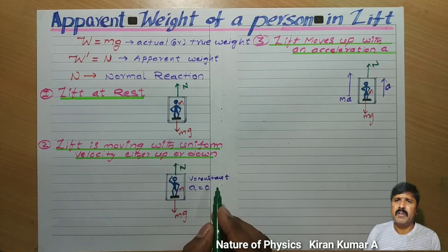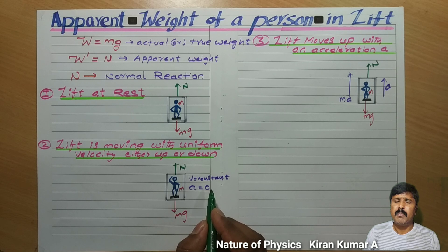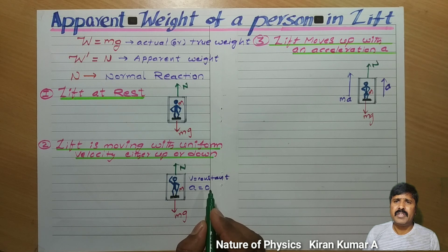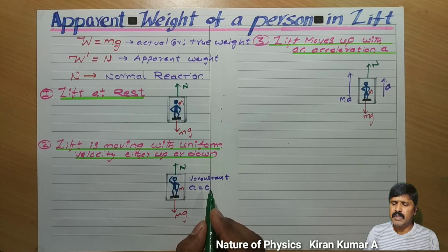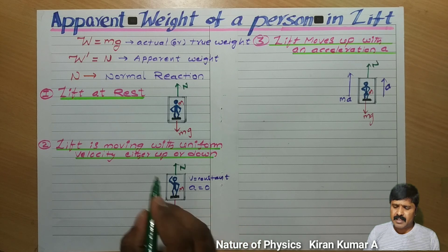N represents the apparent weight of the person in the lift. When the lift is moving in the upward direction or downward direction, there is a small change in the actual weight of the person. When the lift moves upward, apparent weight slightly increases. When the lift moves downward, apparent weight slightly decreases. We will discuss the reason with mathematical proof now.